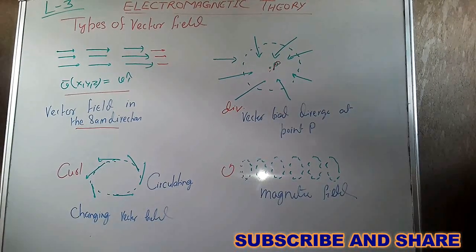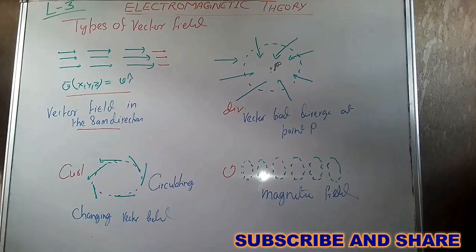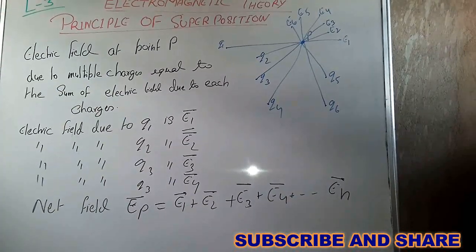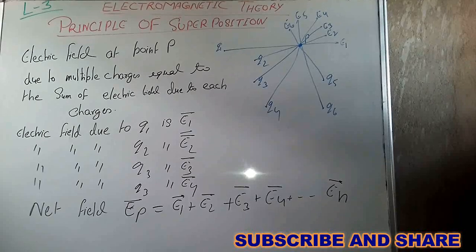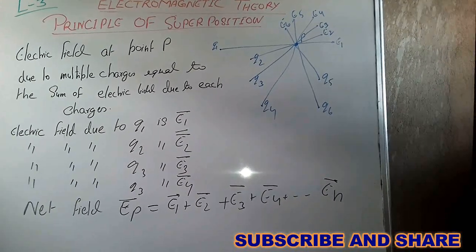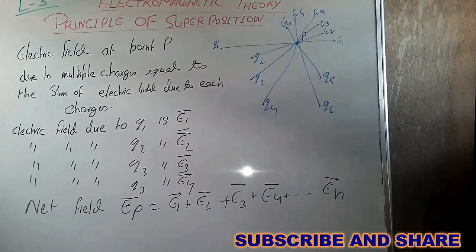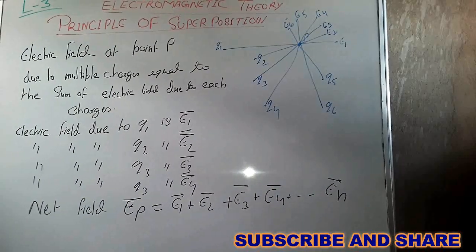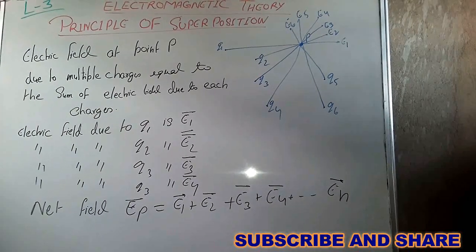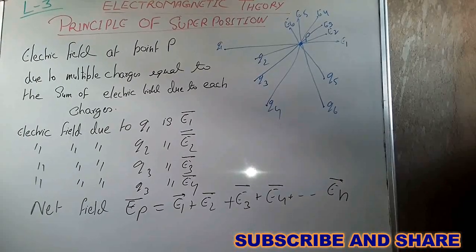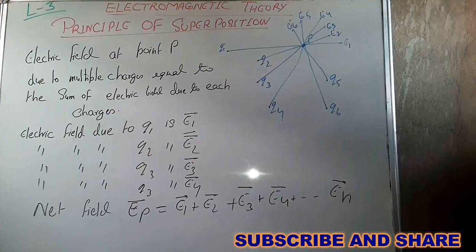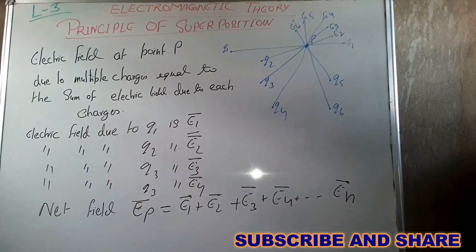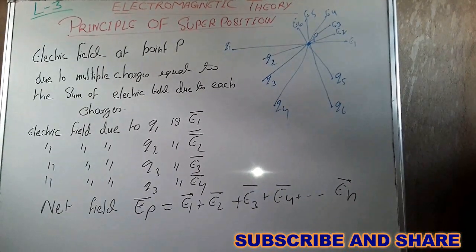These are some examples of the types of vector field. Now, the principle of superposition is an important idea in electromagnetic theory. This principle says that the electric field at any point P due to multiple charges is equal to the sum of the electric fields due to each individual charge.